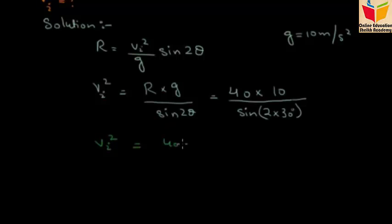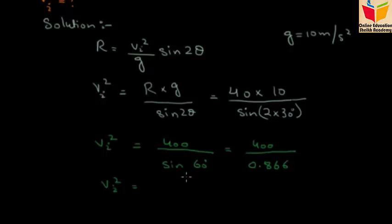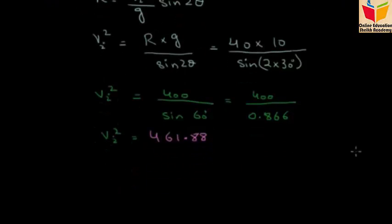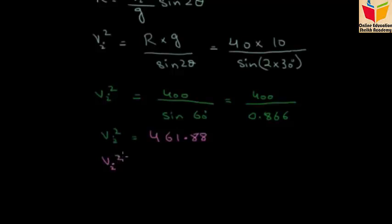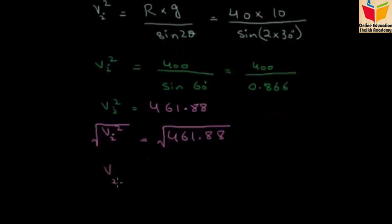40 multiplied by 10 gives us 400, and sine of 2 times 30 is 60 degrees. Sine of 60 degrees is 0.866. Vi squared equals 400 divided by 0.866, which gives us 461.88. We can use the calculator for this value. To find Vi, we take the square root of 461.88, which equals 21.4 meters per second.